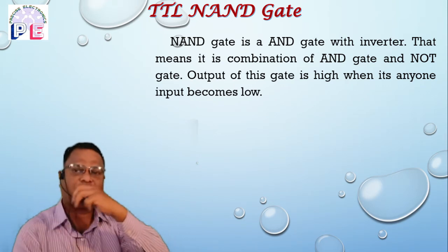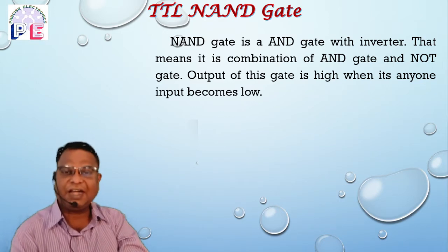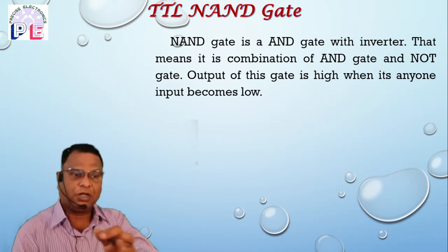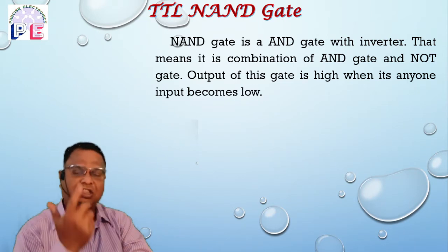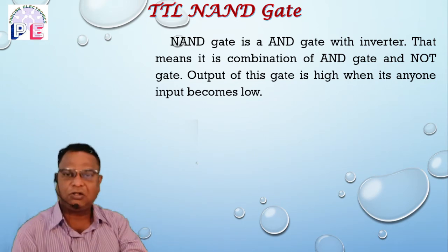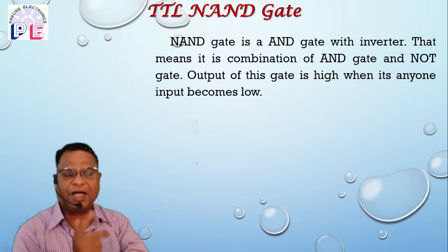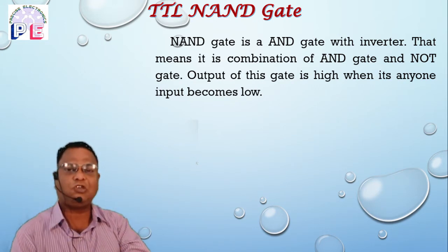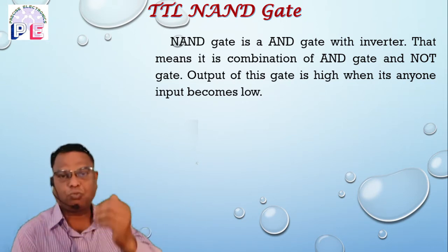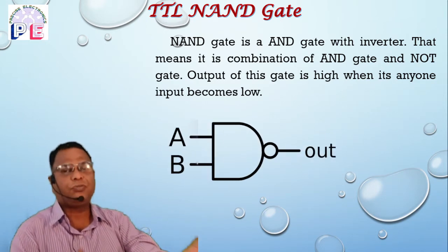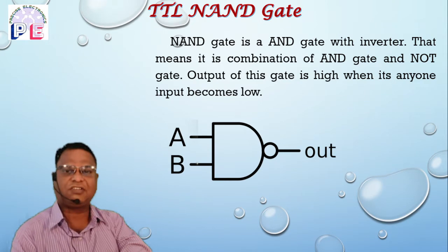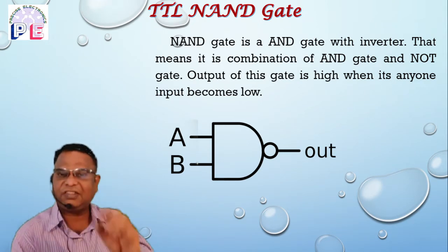The resultant gate is known as a NAND gate. In the case of a NAND gate, the output is high when any one of the inputs is low. From the truth table: when A and B are both 0, output is 1; when A is 0 and B is 1, output is 1; when A is 1 and B is 0, output is 1; but when all inputs are high, output goes to low. So the NAND gate is defined as the gate which gives a high output when any one input is low.